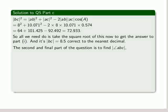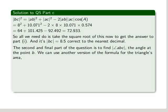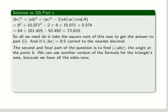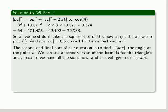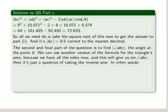Now the second and final part of the question is to find ABC, the angle. So we use another version of the formula for the triangle's area, because we have the length of all the sides now: AB, AC and BC. And using this other version of the area of the triangle, we'll be able to get the sine of ABC. And then it's just a question of taking the inverse sine.